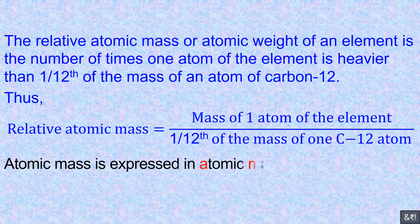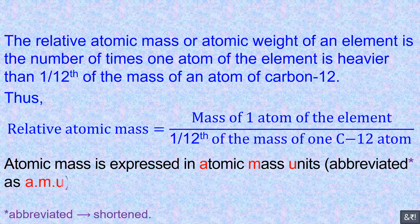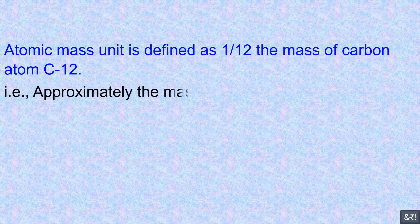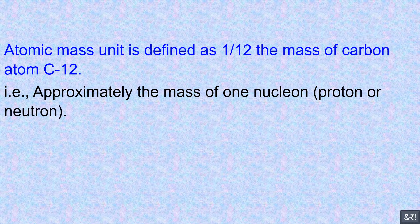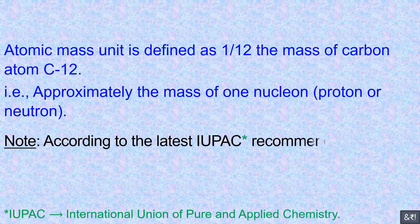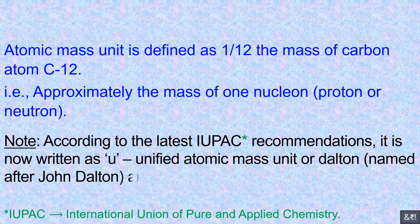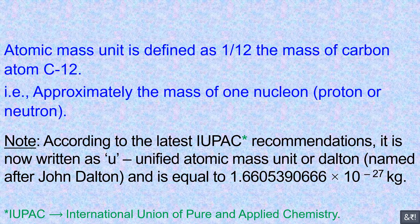Atomic mass is expressed in atomic mass units, abbreviated as AMU. Atomic mass unit is defined as one twelfth of the mass of one carbon-12 atom, that is, approximately the mass of one nucleon — proton or neutron. Note: according to the latest IUPAC recommendations, it is now written as U, unified atomic mass unit or Dalton, named after John Dalton, and is equal to 1.6605390666 × 10⁻²⁷ kg.